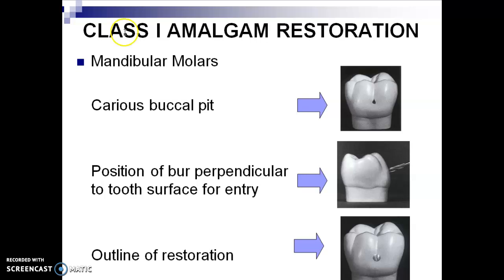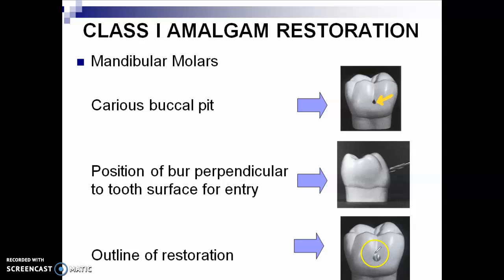For mandibular molars, if you have a carious buccal pit like this, you position the burr perpendicular to the tooth surface for entry, and you may have an ovoid restoration, circular, or even triangle preparation. Again, the outline could be ovoid or triangle.